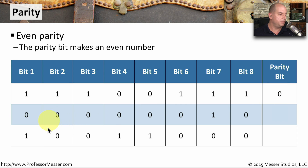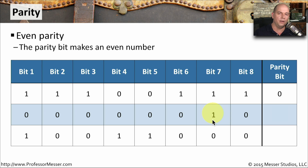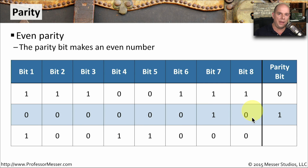Looking at the next byte — 0, 0, 0, 0, 0, 0, 1, 0 — we can see there is only a single 1. That is currently an odd number of 1s. So to make this an even number of 1s, the parity bit would be a 1. That's how we determine whether the parity of a particular byte is correct.